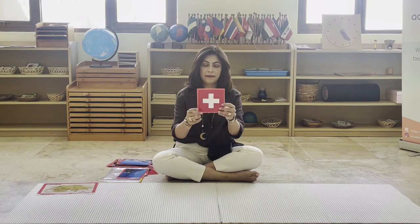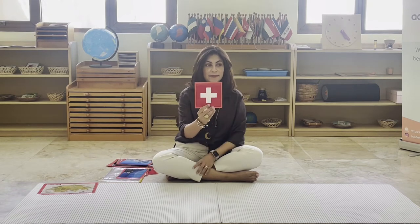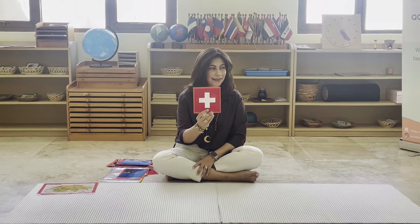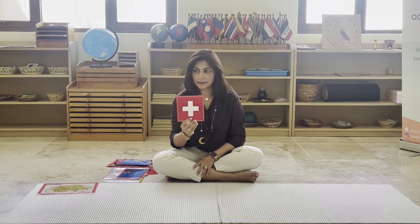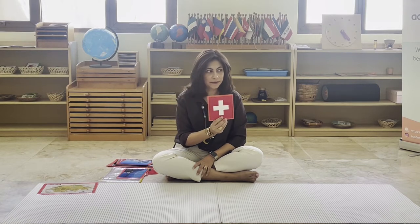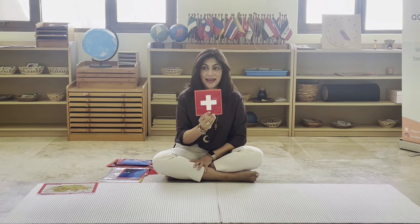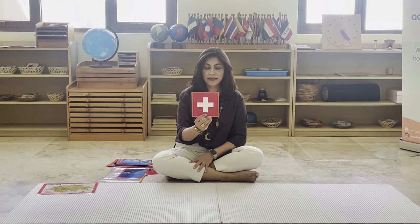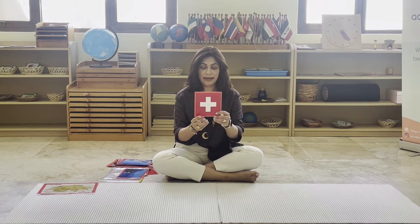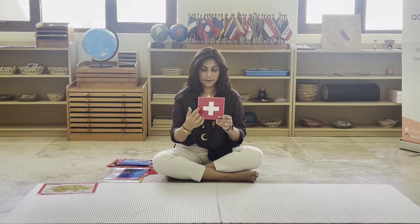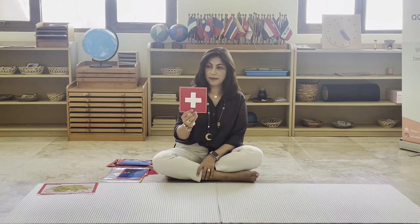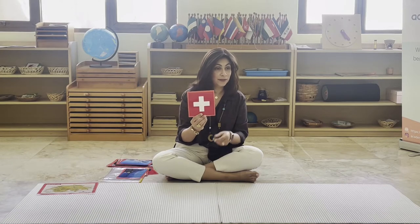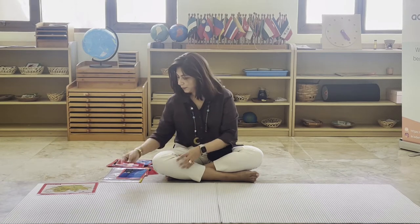This is the flag of Switzerland. What colors do you see on it? Red. Right. It's a little bit different from other flags — it's a square. Most flags are rectangle, right? This flag has a cross in the middle, and it also became the symbol of the Red Cross, the ones who provide medical help to people.